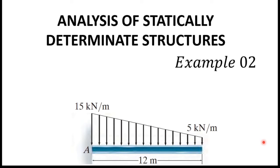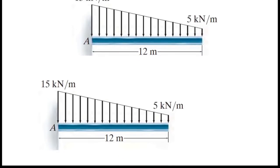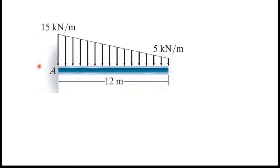Hello everyone. In this video I am going to show you how to find the support reaction of this beam. This is the analysis of statically determinate structures, Example 2. This is a fixed beam with a distributed load. The distributed load values are 15 kN/m and 5 kN/m, and this is not a uniformly distributed load. The beam length is 12 meters.